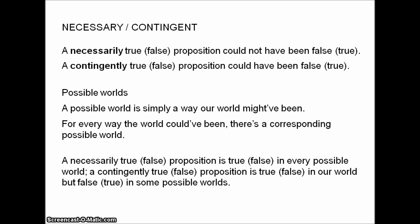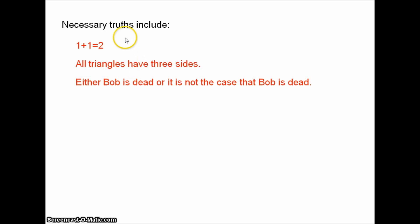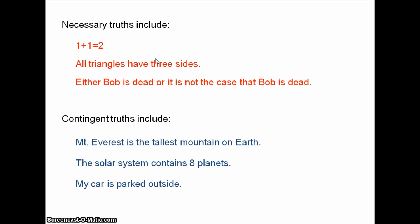For example, 1 plus 1 equals 2 is true in every possible world you might like to visit, whereas 'my car is parked outside' is false in plenty of worlds — maybe I don't have a car, maybe I don't even exist in some worlds. Some examples of necessary truths: 1 plus 1 equals 2, all triangles have three sides, either Bob is dead or it is not the case that Bob is dead. Some contingent truths: Mount Everest is the tallest mountain on Earth.